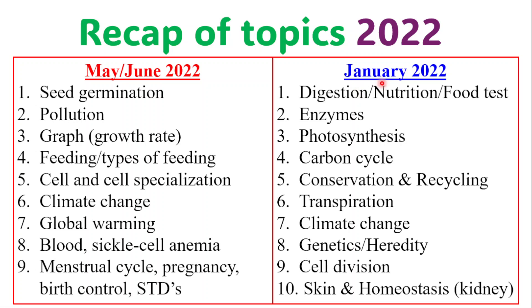For January 2022, you got questions on digestion, nutrition, food tests, enzymes, photosynthesis, carbon cycle, conservation and recycling, transpiration, climate change, genetics or heredity, and cell division. There was also a question on skin, particularly relating to homeostasis referring to the kidney, and that includes how you control water as well.